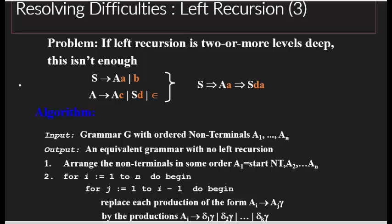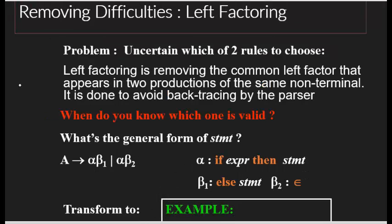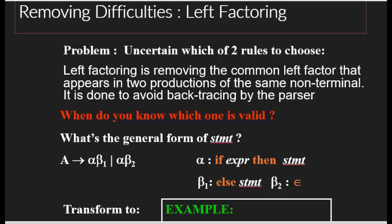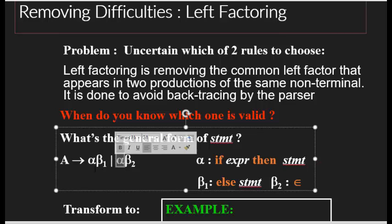Now let's look at left factoring — another form of ambiguity in a grammar. Left factoring is the removal of the common left factor that appears in two productions of the same non-terminal. It is done to avoid backtracking by the parser. Always look at the leftmost symbol — since it's common in multiple productions, the parser cannot decide which rule to choose.